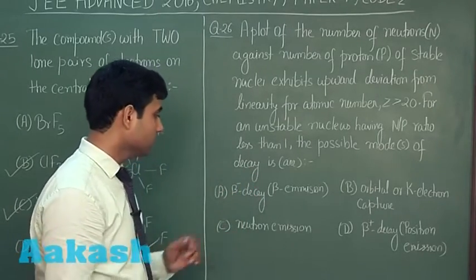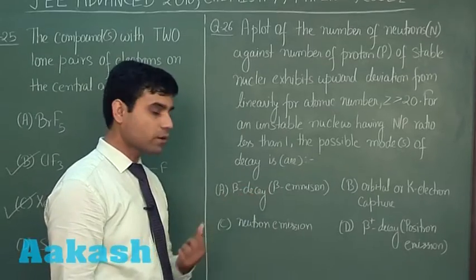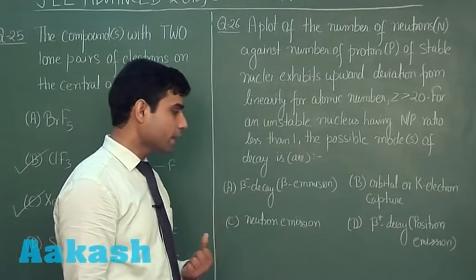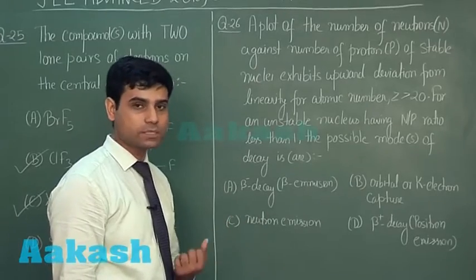The four options given are beta emission, K electron capture, neutron emission and positron emission.